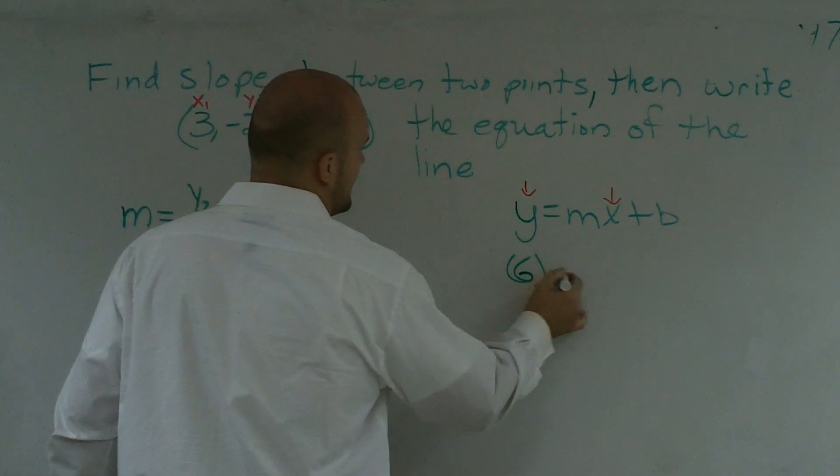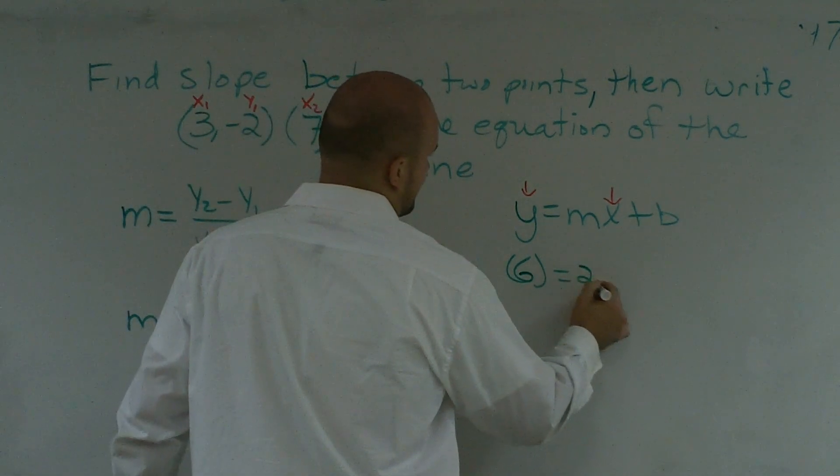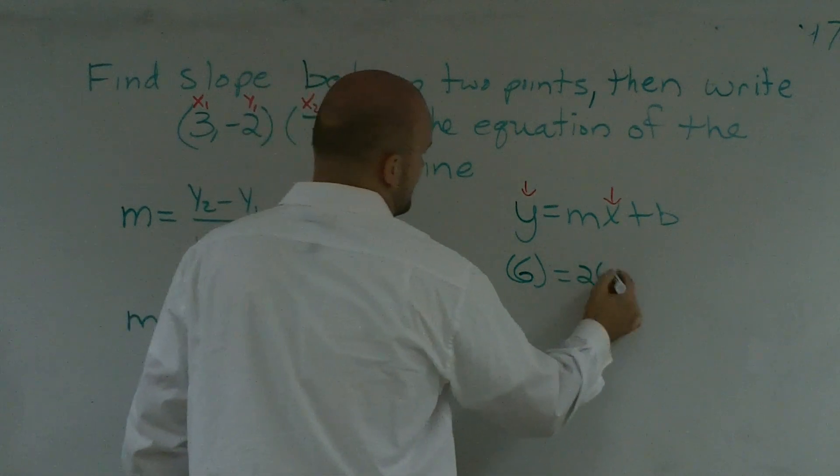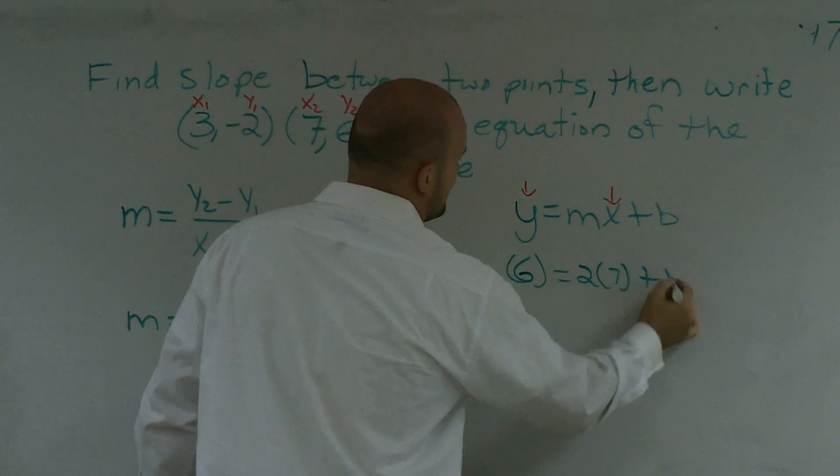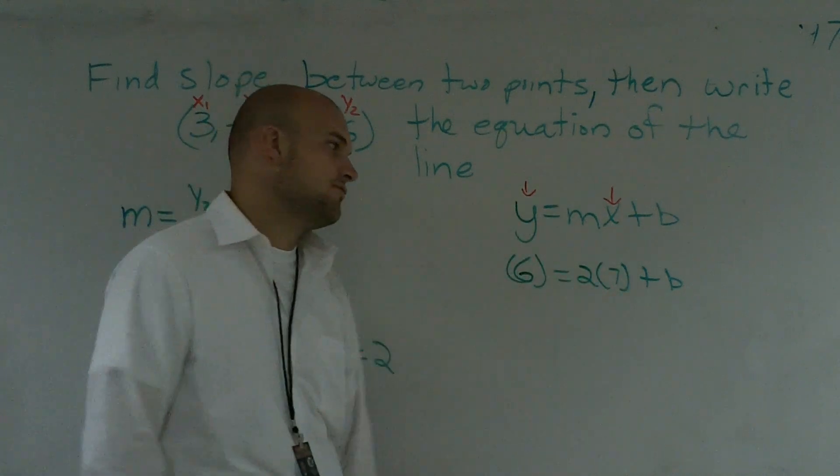6 is now my y, m is 2, times x, which is 7, plus b. I don't know what b is because that's your y-intercept. That's what you're trying to solve for.